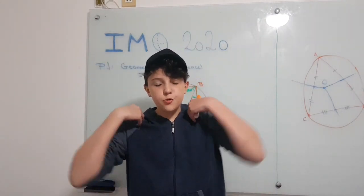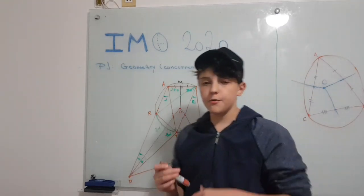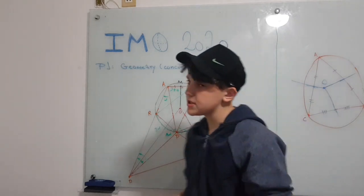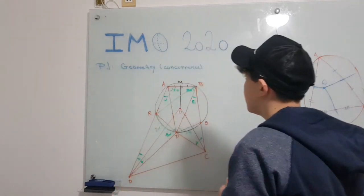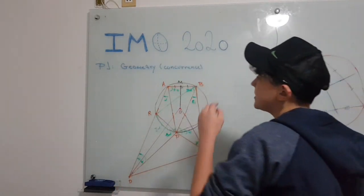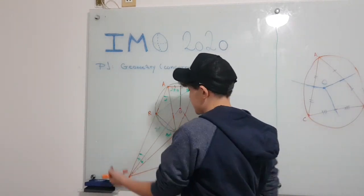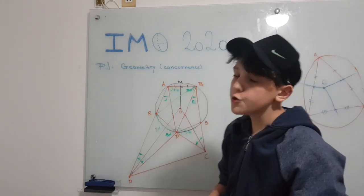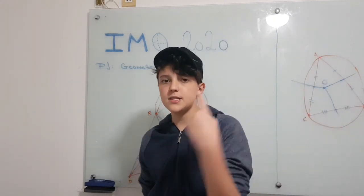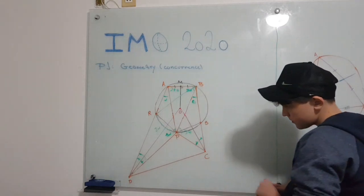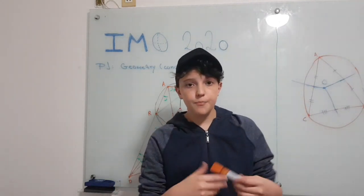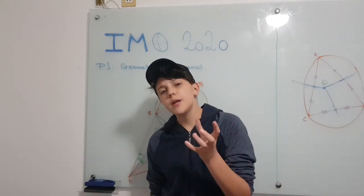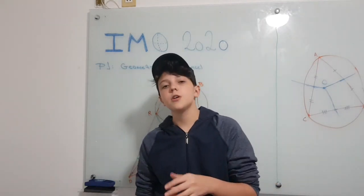Hello guys, how are you? My name is João Gilberto and this is the channel Isatizando Ales from Brazil. Today I'm going to present you IMO 2020 Problem 1, which is a geometry problem. I'm 14 years old and I'm going to present the solution of this problem, which is about concurrence of three lines on the same point. First I'm going to talk to you about a property of the circumcenter of triangles.